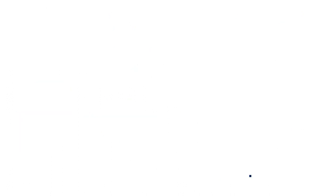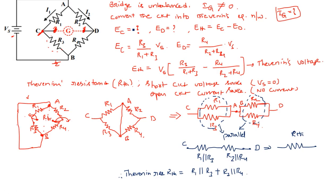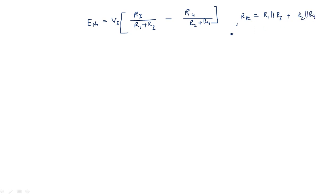So to summarize: ETH = Vs * [R3/(R1+R3) − R4/(R2+R4)], and RTH = (R1‖R3) + (R2‖R4). Now we can draw the Thevenin's equivalent circuit.